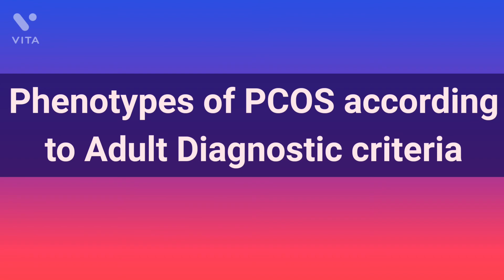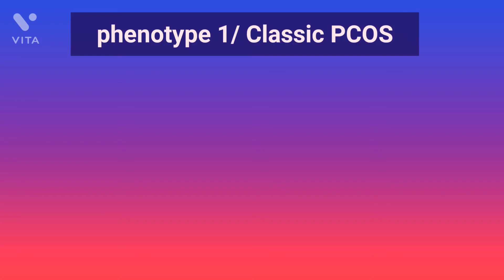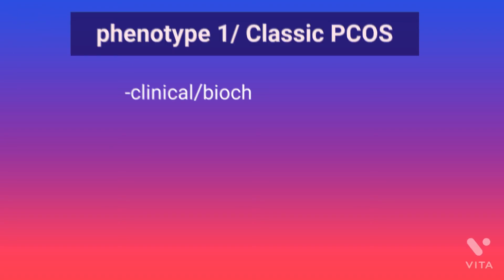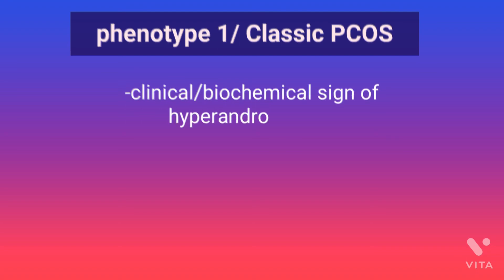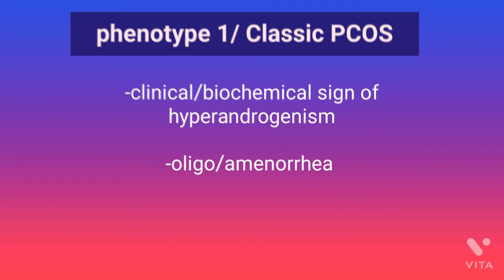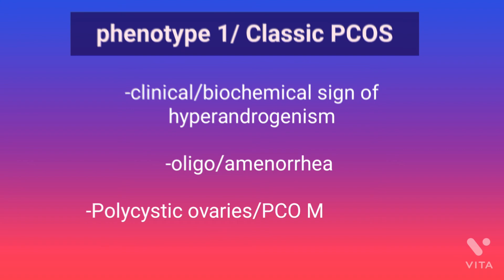Now let's learn about the phenotypes of PCOS according to the adult diagnostic criteria. Phenotype 1 is also known as classic PCOS, in which clinical or biochemical evidences of hyperandrogenism are present, evidences of oligo or anovulation are also present, and ultrasonographic evidence of polycystic ovaries is also present.